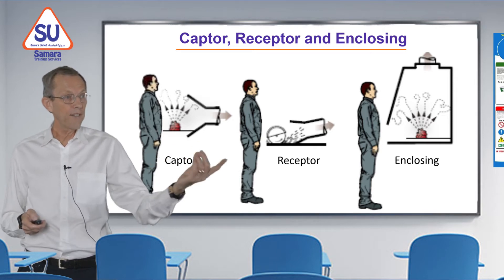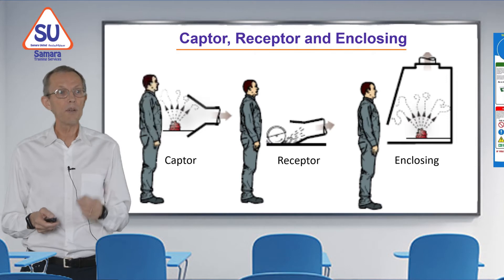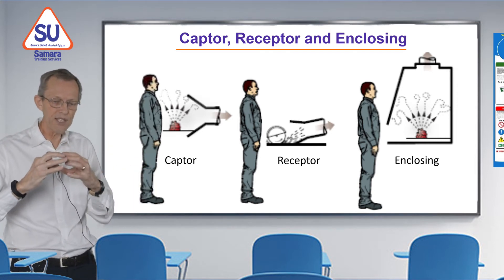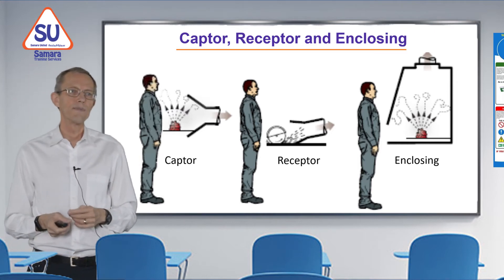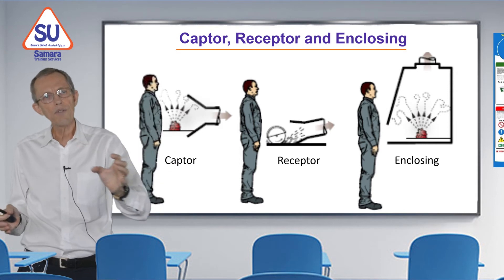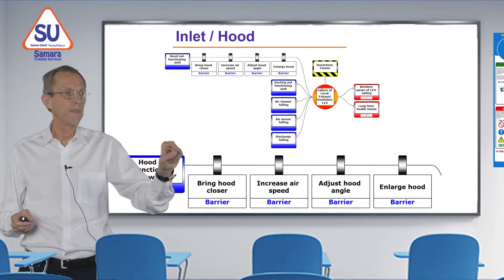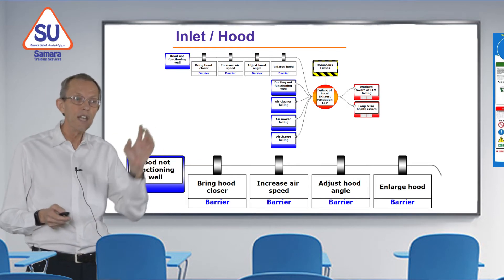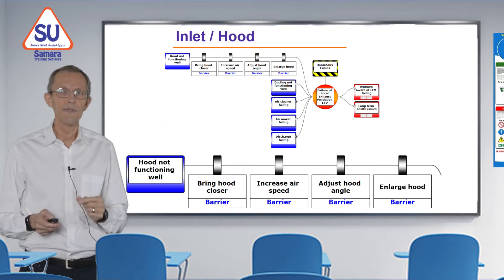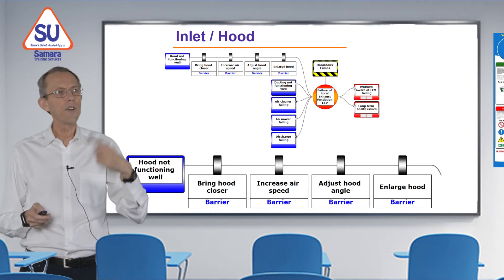The fumes on the right-hand side — the captor — the fumes are produced vertically but we're catching them horizontally. In the middle, the receptor, the sparks from the grinder come out in one direction so we put the hood to catch them in that direction. On the last one, the enclosing type, fumes come from everywhere but we have an enclosure around it and suck air out the top. On the bow tie, the first threat line enlarged at the bottom shows: hood not functioning — we bring the hood closer, increase the air speed, adjust the angle, or enlarge the hood — four barriers.